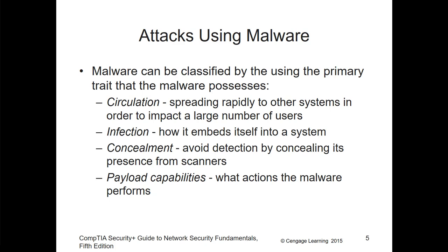Malware can be classified using primary traits that almost all malware has. These are: circulation — how it spreads; infection — how it embeds itself; concealment — avoiding detection; and payload capabilities — the action of the malware.